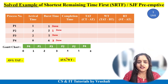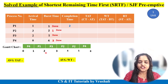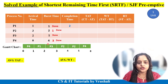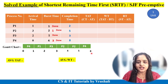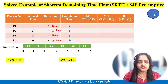Now, based on this Gantt chart, you need to calculate the required values. First, find the completion time: P1 completed at time 2, P2 completed at time 5, P3 completed at time 3, and P4 completed at time 8. Next, find the turnaround time using the formula: completion time minus arrival time. P1: 2 minus 1 equals 1. P2: 5 minus 3 equals 2. P3: 3 minus 2 equals 1. P4: 8 minus 0 equals 8.